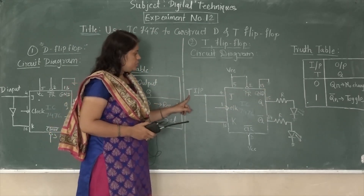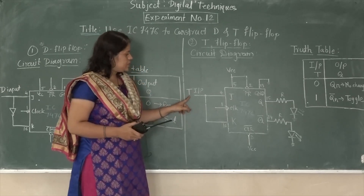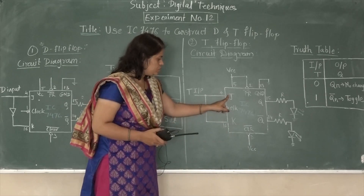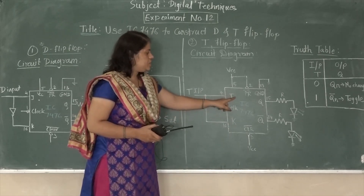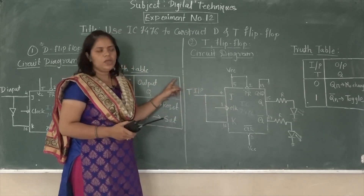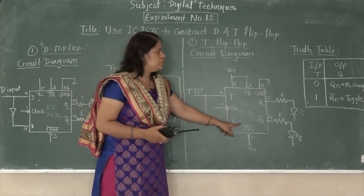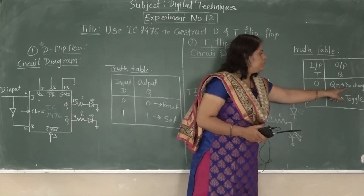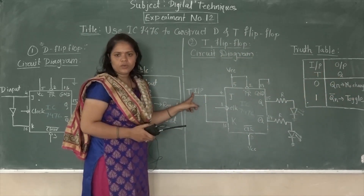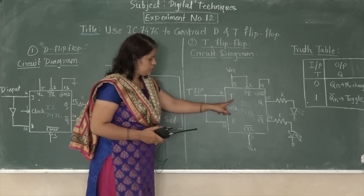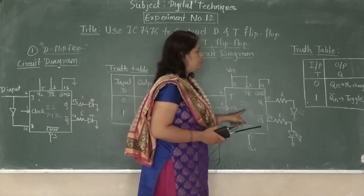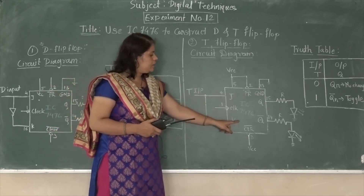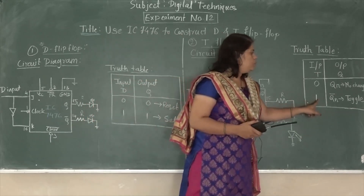When T is equal to 0, that 0 passes directly so J is equal to 0 and K is equal to 0. We know from the JK flip-flop that when J is equal to 0 and K is equal to 0, it gives the output the same as previous — that condition is called no change. When T is equal to 1, that 1 directly passes so J is equal to 1 and K is equal to 1, and we get the output in toggle mode. We have seen in JK flip-flop that when J is equal to 1 and K is equal to 1, the output is in toggle condition.